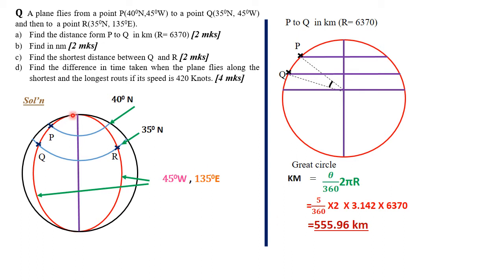For part b, we find the distance in nautical miles. The distance along a great circle is simply θ times 60, where θ is the angle difference. In our case it's 5, so 5 times 60 gives 300 nautical miles. To convert 300 nautical miles to kilometers, multiply by 1.853; to convert 555.96 kilometers to nautical miles, divide by 1.853. The answers won't be exactly the same because 1.853 is an approximation.